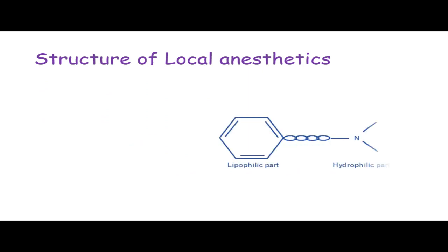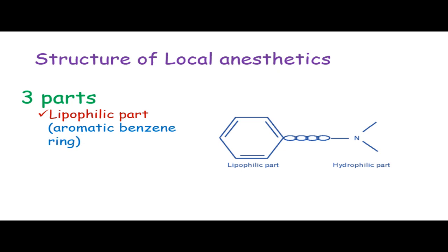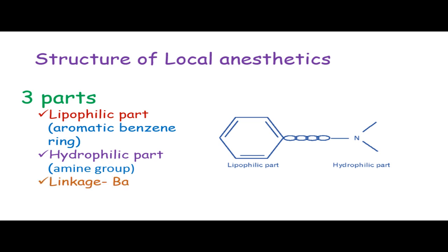When looking at the structure of local anesthetics, the structure is composed of three parts or components. The first part is the lipophilic or hydrophobic part, made of an aromatic benzene ring — it is the water-repelling part. The hydrophilic part is made of an amine group. The lipophilic and hydrophilic sections are connected by a linkage, which is the basis for classification of local anesthetics.